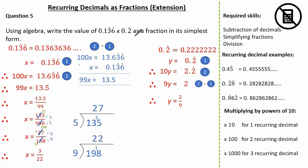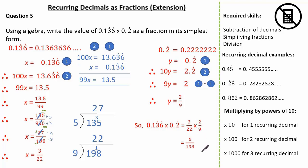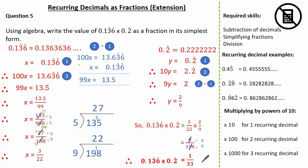Now we know 0.136 recurring is 3 over 22, and we know 0.2 recurring is 2 ninths. Let's complete our calculation in fractions. 3 over 22 multiplied by 2 over 9. Using our skills on multiplication, 3 times 2 is 6, and 22 times 9 is 198. Because the question wanted us to write it in its simplest form, we can divide both the numerator and denominator by 6. So our final answer to 0.136 recurring multiplied by 0.2 recurring is 1 over 33.